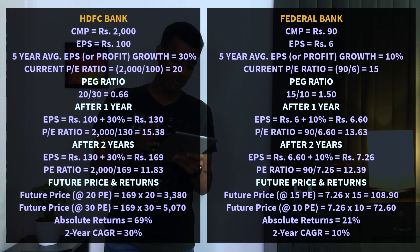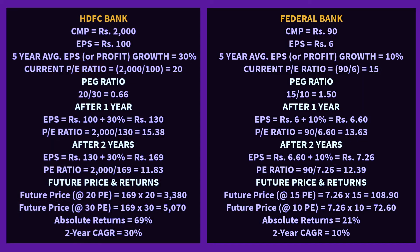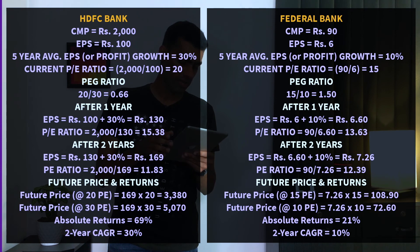Comparing the two banks: one stock has a CAGR of around 30% and the other around 10%. With a PEG ratio of 1.5, Federal Bank appears less attractive compared to HTC Bank. The PEG ratio analysis suggests HTC Bank provides better returns relative to its valuation.